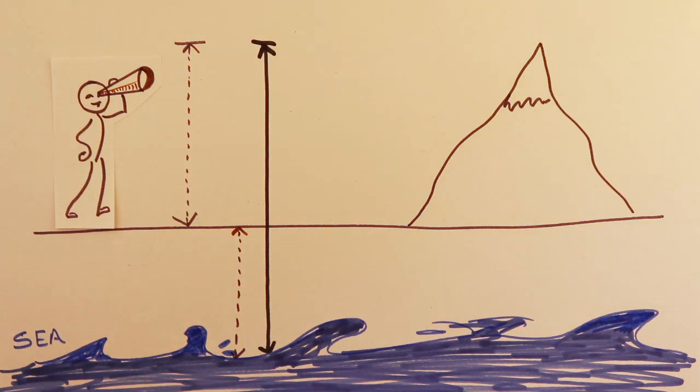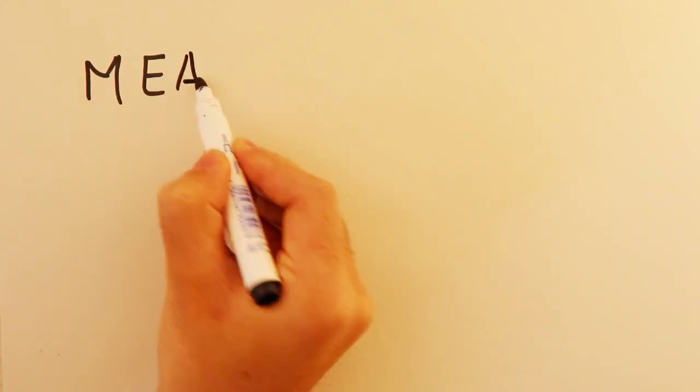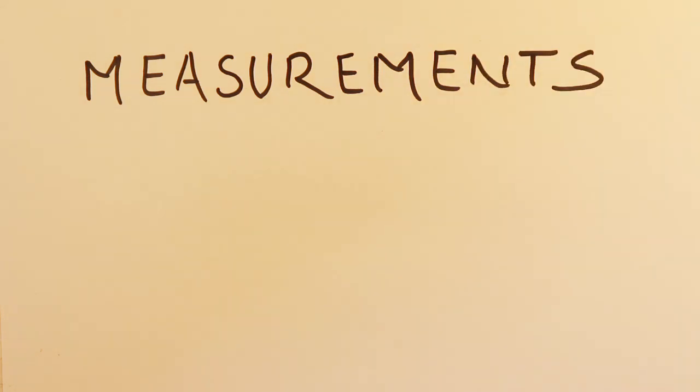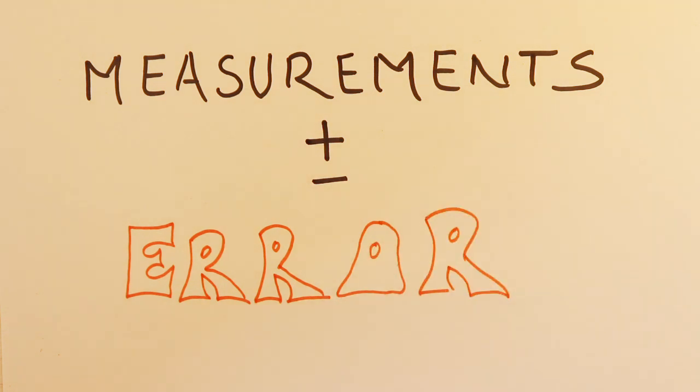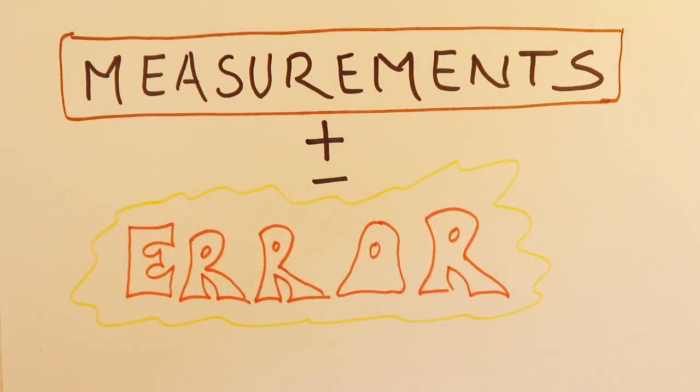Finding the height of mountain might seem easy, while in practice, it is not, because every information you collect at the ground is associated with error and the game is about knowing and applying the correction factors, which will reduce your error. Let's try to see some of these errors.